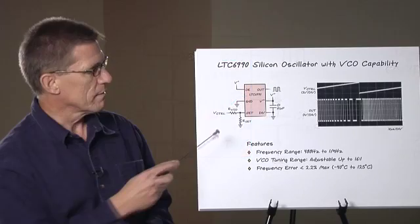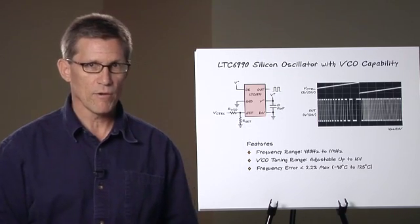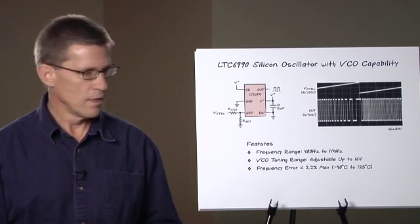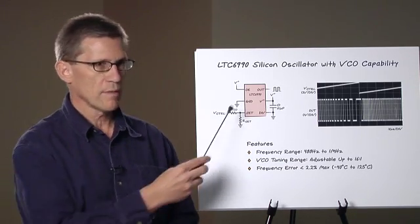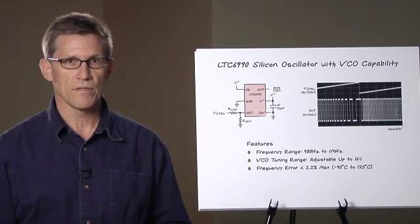You can intuitively see that if V control is pulled down to ground, RVCO and Rset are now in parallel and the resulting output frequency is as you would expect from a parallel combination. As V control is pulled up some, less and less current comes out of RVCO and out of the set pin, thus decreasing the frequency.